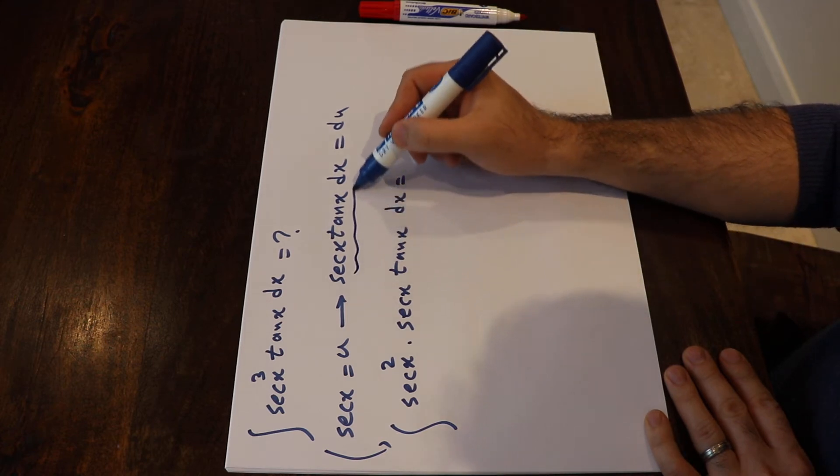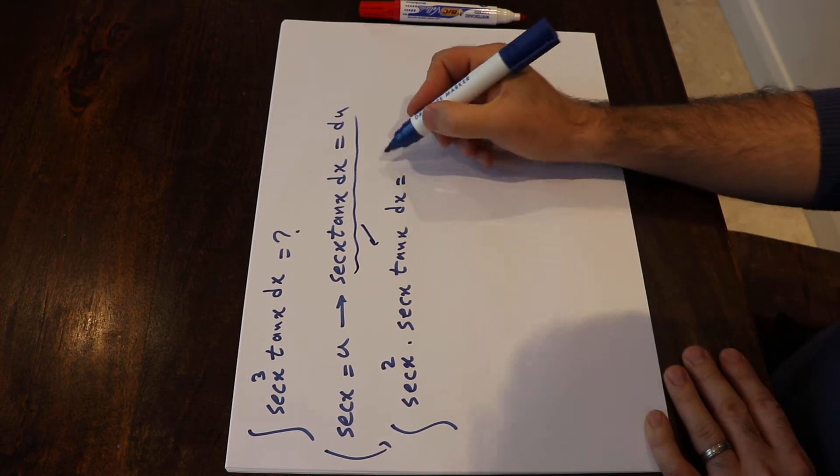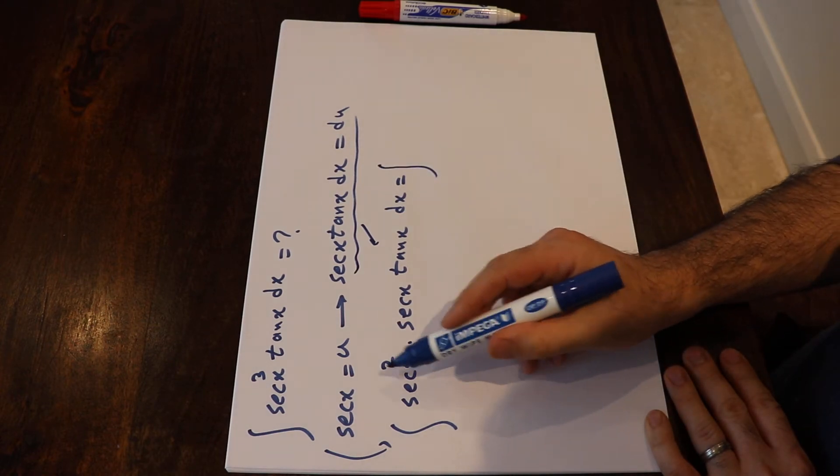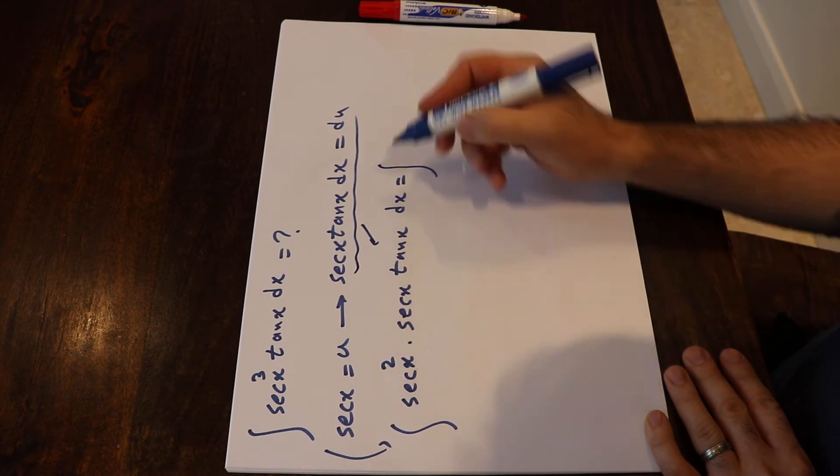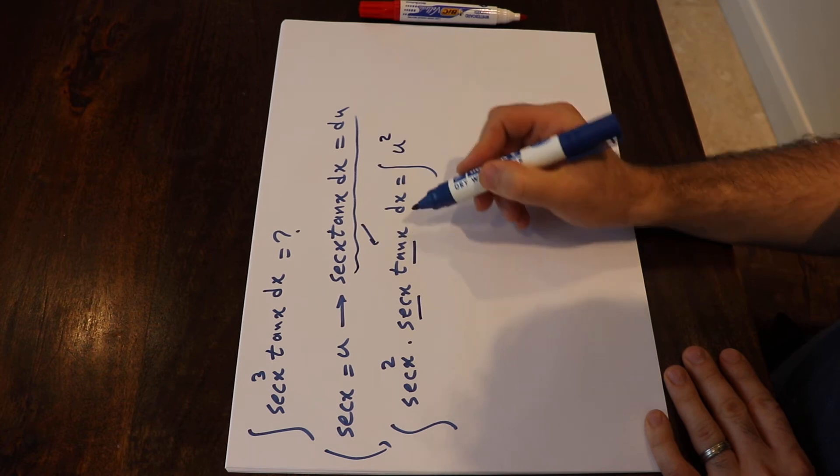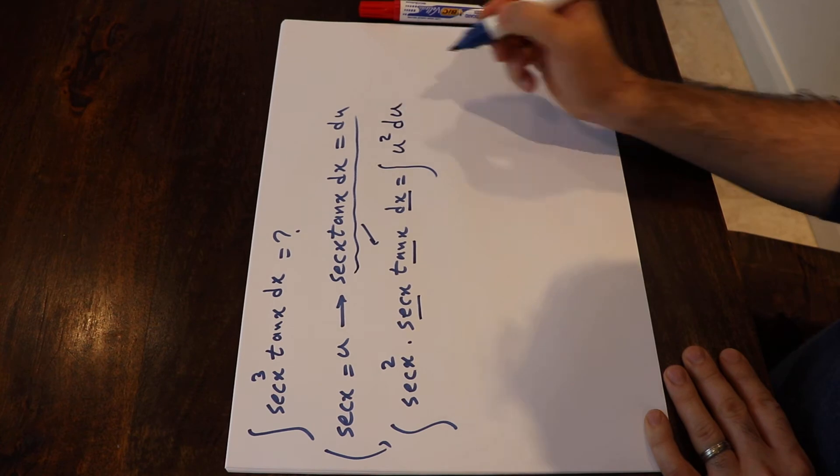Okay, so now if you substitute this expression into this integral, you can rewrite this integral as, instead of sec x I can write u. So u² times, instead of sec x tan x dx, that is sec x tan x dx, I just simply write du.